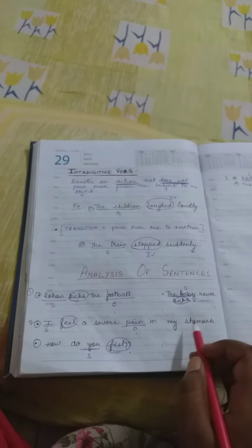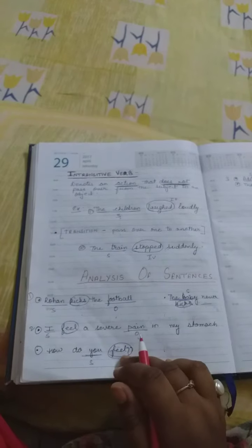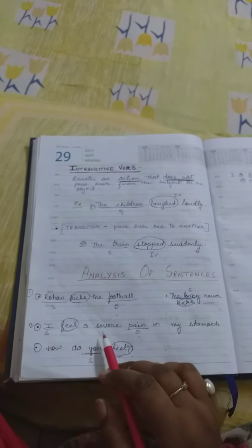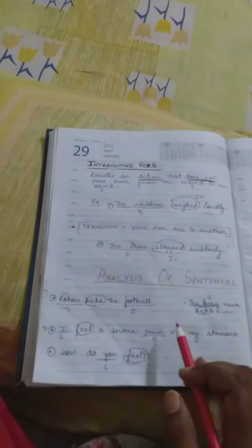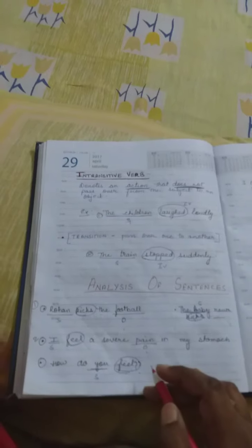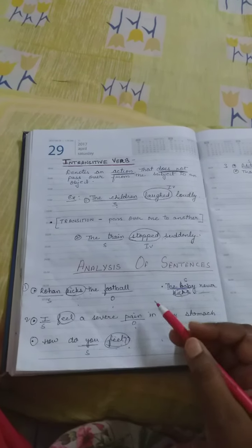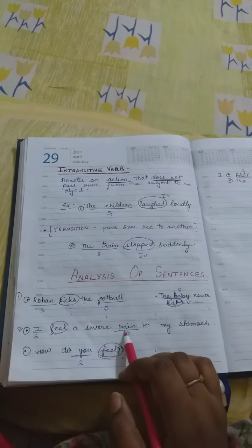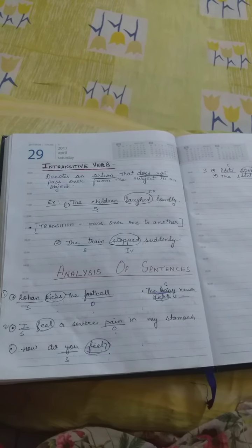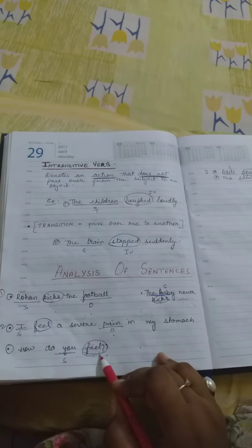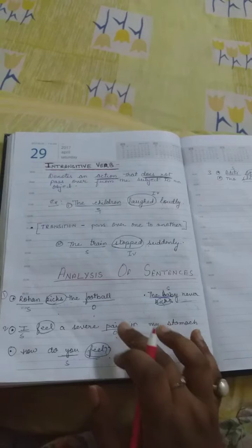'I feel a severe pain in my stomach' and 'How do you feel?' The verb 'feel' is the same in both. Who feels the severe pain? I — subject. And for 'how do you feel?' you are the subject. Now for the object: what do I feel? I feel the pain — that is the object, so this verb is transitive. But after 'how do you feel?' do we have an object? No. That means this is intransitive. So it is a very easy and simple concept about transitive and intransitive verbs.